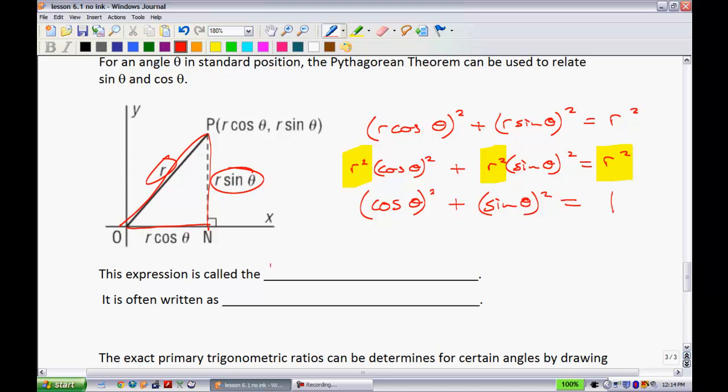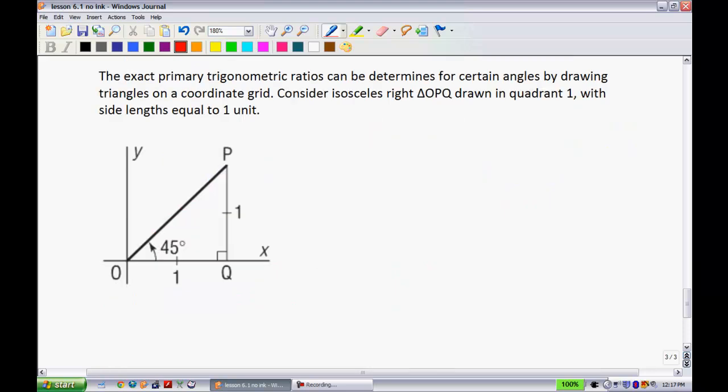Alright. And this expression is called the Pythagorean identity. And so we'll often express this in simplest terms as cosine squared theta plus sine squared theta is equal to one. In addition to the Pythagorean identity, I also wanted to talk to you guys about how we can determine the exact primary trigonometric ratios down here. So these are the two last little notes.